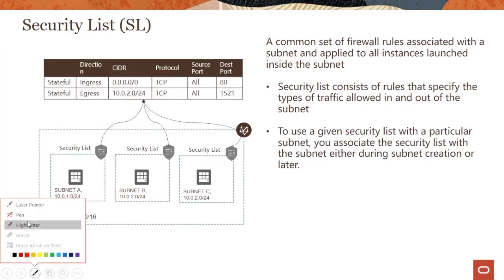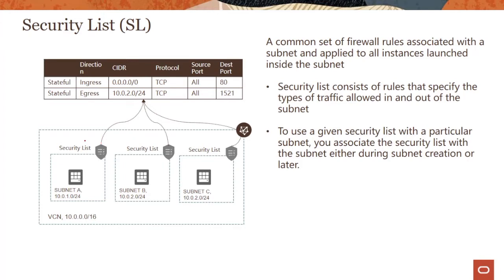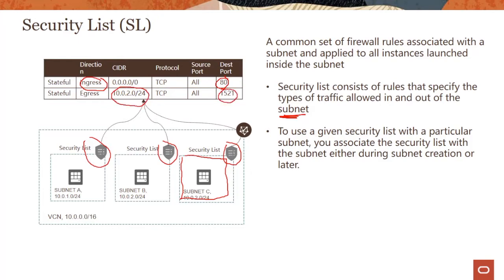If you look at the diagram, there's a security list for each subnet. The first thing to notice is that the security list is applied at the subnet level. Second, all three security lists have the same rule shown here — they can be different rules. It basically says ingress, meaning incoming traffic: I'm allowing all traffic in on port 80. And egress, meaning outgoing traffic: I'm only allowing traffic to this particular subnet on port 1521. This is a sample entry; your situation would be different depending on your requirements.